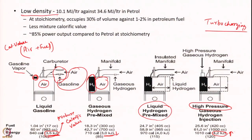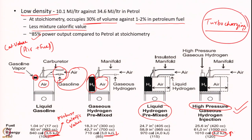At stoichiometry, hydrogen occupies around 30% of the cylinder volume compared to just 1–2% for petroleum-based fuels such as petrol, diesel, ethanol, or biodiesel. Because of this low density, it suffers from lower mixture calorific value, and typically delivers about 85% of the power output compared to petrol at stoichiometry. One attractive option to compensate is turbocharging the engine.